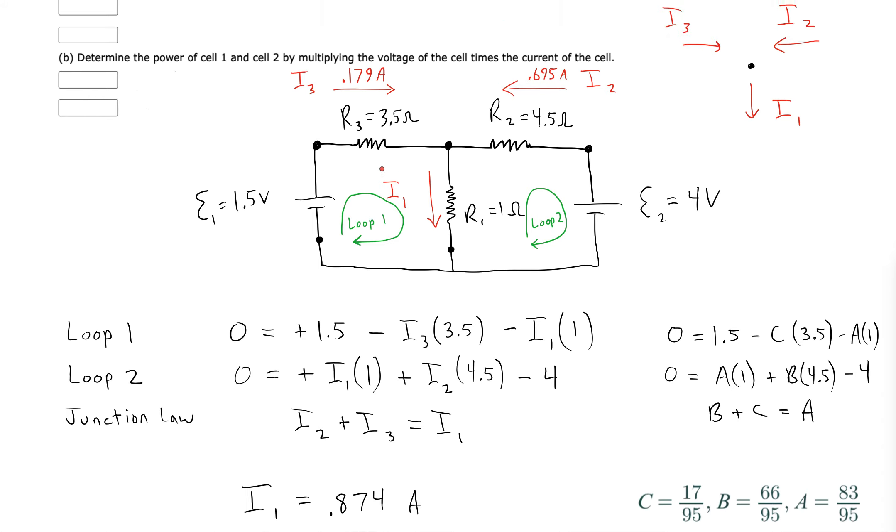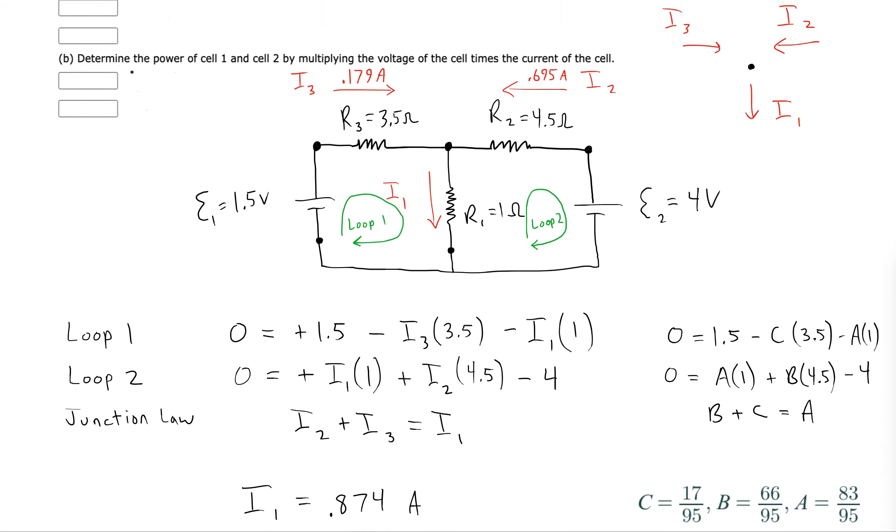So the power of battery 1 is going to be 1.5 volts times 0.179 amps. And then the power of battery 2 will be 4 volts times 0.695 amps.